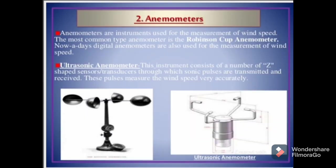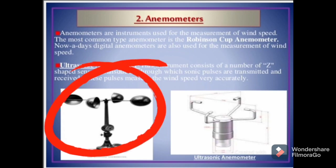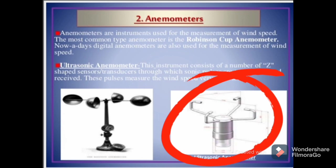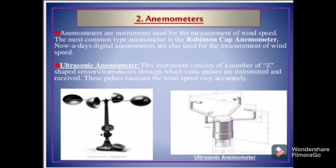Anemometers are instruments used for the measurement of wind speed. The most common type is the Robinson Cup anemometer. Nowadays, digital anemometers are also used. The ultrasonic anemometer consists of a number of Z-shaped sensors or transducers through which sonic pulses are transmitted and received. These pulses measure the wind speed very accurately.